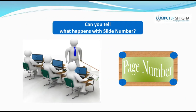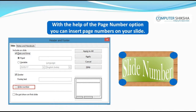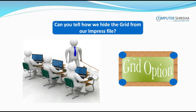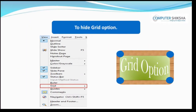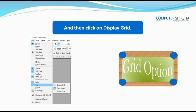Can you tell what happens with page number? With the help of the page number option, you can insert page numbers on your slide. Can you tell how we hide the grid from our Impress file? In order to hide the grid, we first click on the View menu and then select the Grid option and click on Grid Display, which will hide the grid.